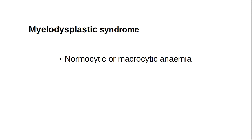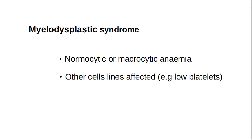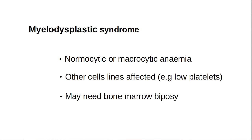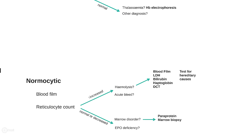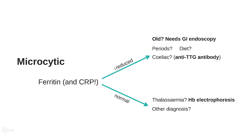Another cause for macrocytic anemia is myelodysplastic syndrome, which can be a difficult diagnosis to make. The blood film may have characteristic dysplastic changes but can also be normal. It's more likely to be suspected if more than one cell line is affected — in other words, if there are low platelets or white cells. Patients with unexplained cytopenias are often referred to a haematologist who may perform a bone marrow biopsy, and myelodysplastic syndrome is generally a disease of the elderly.